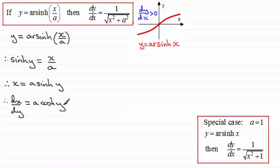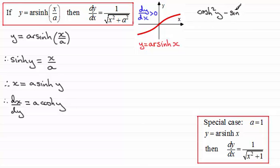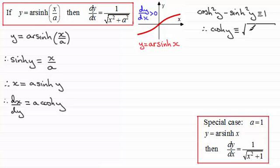Now, we've got to get this in terms of x. All I know is sinh y equals x over a, so I need a connection between sinh y and cosh y. That connection is the identity that you should be familiar with: cosh squared y minus sinh squared y is identically equal to 1. So if we rearrange this to make cosh y the subject, we get cosh y equals the square root of sinh squared y plus 1.